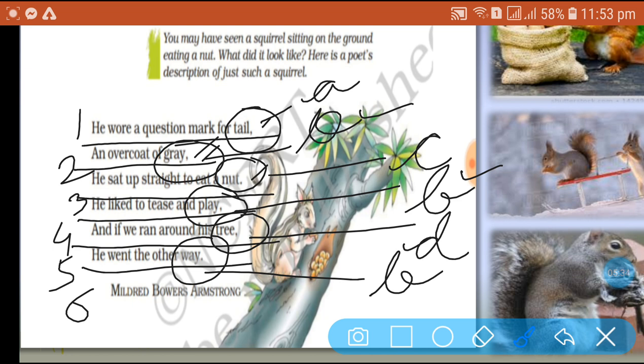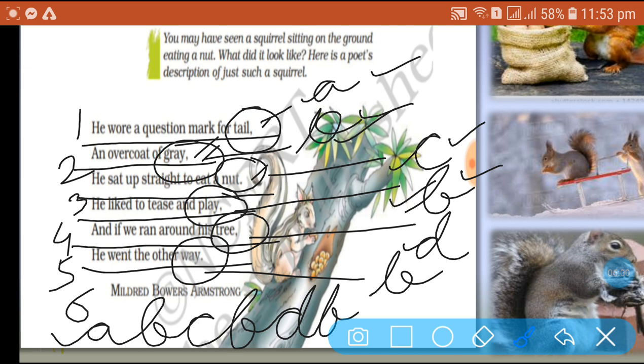So how does it stand on the whole? It stands as A, B, C, B, D, B. Isn't it? A, B, C, B, D, B. So the rhyming scheme of this poem, Squirrel, is A, B, C, B, D, B.